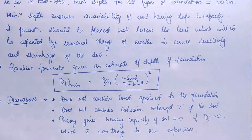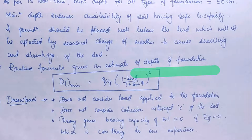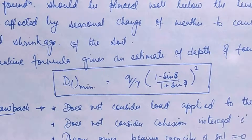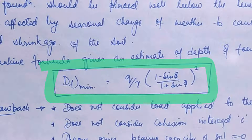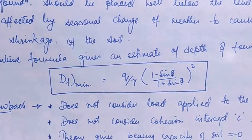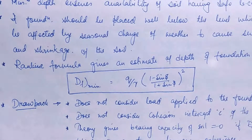Rankine has given a formula to estimate the depth of the foundation. According to Rankine, the minimum depth of foundation equals Q divided by gamma, multiplied by the quantity [(1 minus sin φ) / (1 plus sin φ)] squared, where φ is the angle of internal friction, gamma is the unit weight of soil, and Q is the load coming from the structure.